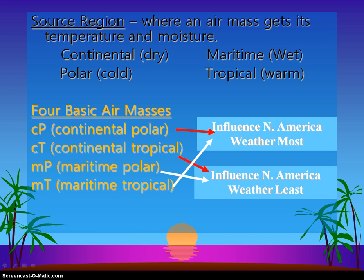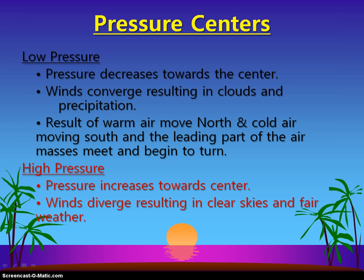Depending on where our air masses come from, they're going to come from a particular area called the source region. If they come from up north from the Arctic, they'll carry colder temperatures and be considered continental polar. If they come from the tropic areas close to the equator or across the oceans, they're going to be considered maritime tropical. Of the four major air masses, the two that influence the U.S.'s weather the most are continental polar and maritime tropical. Pressure centers can also influence the weather — low-pressure and high-pressure systems can move in with these different air masses.